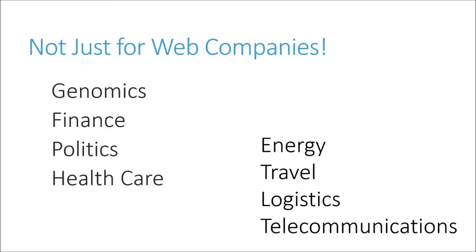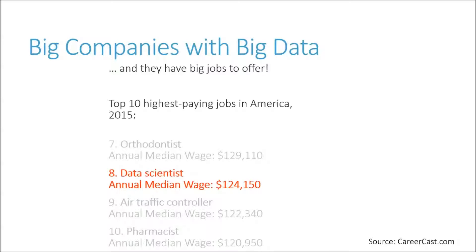It's not just for big web companies in Silicon Valley either. Hadoop is used in genomics for DNA analysis, in finance for analyzing stock trading, and in politics — it was used to manage the Obama campaign. It's used in healthcare for managing large amounts of health records, in energy for analyzing geographical data to find the best place to drill for oil, in travel for managing flight schedules and routes, in logistics for routing packages effectively, and in telecommunications for managing log information, subscriber data, and billing.